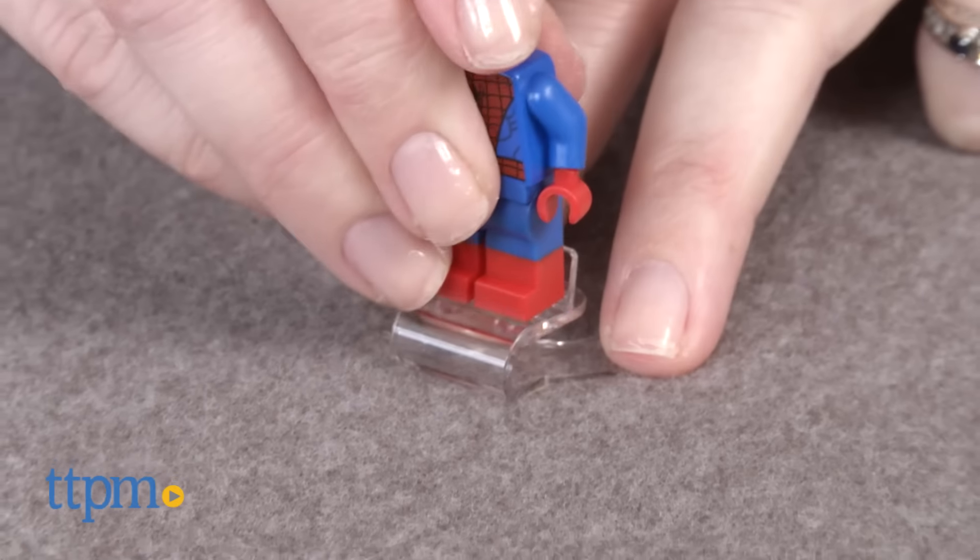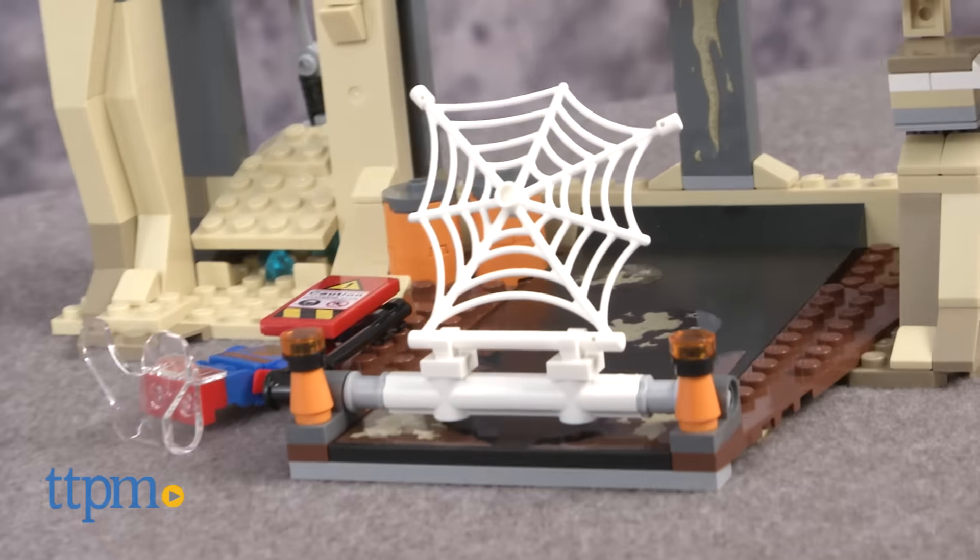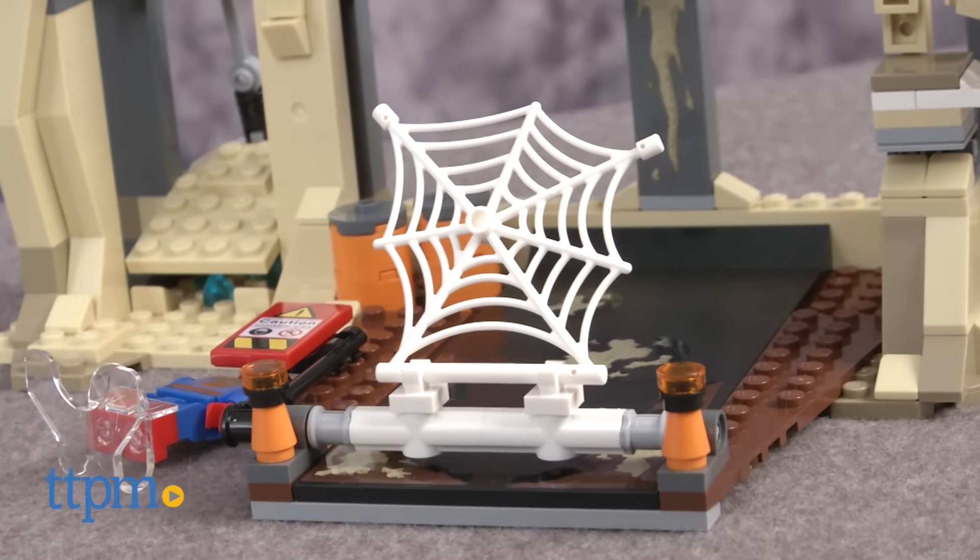Also included is a super jumper piece that allows kids to launch a minifigure into action with just a flick of the finger. Launch Spider-Man at the construction sign to make the spider web pop up.